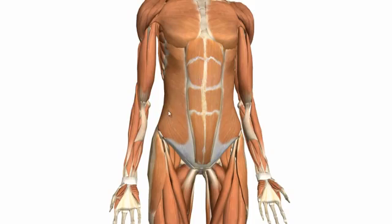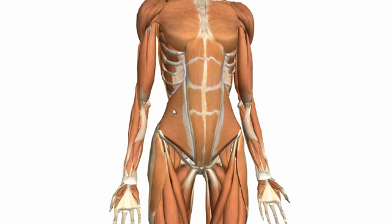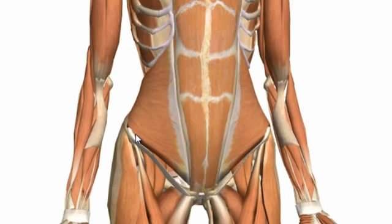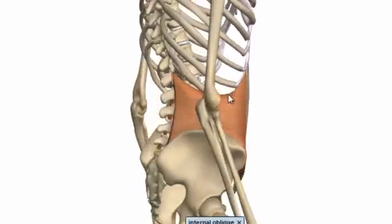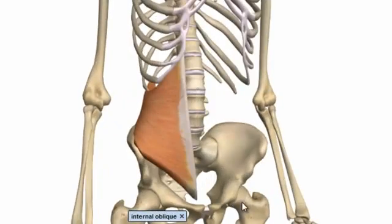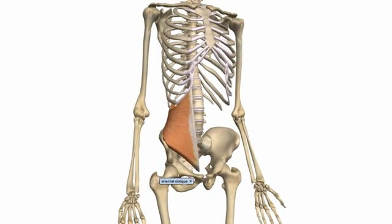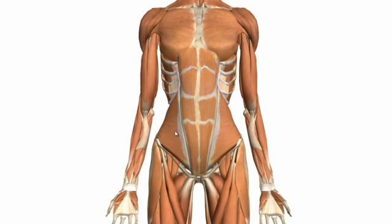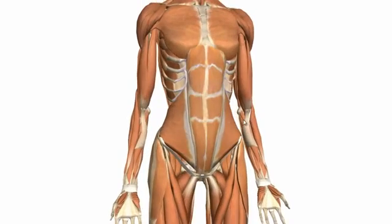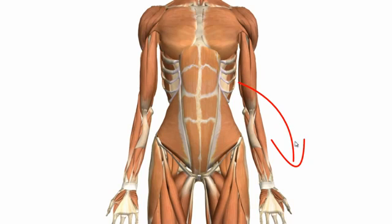The internal oblique originates on the iliac crest and the lateral part of the inguinal ligament. It inserts on the lower ribs — ribs 9 to 12 — and also on the linea alba in the midline and on the pubic crest. Similar to the external oblique, when both internal oblique muscles contract they flex the trunk, and when one side contracts it laterally flexes the trunk to the same side.